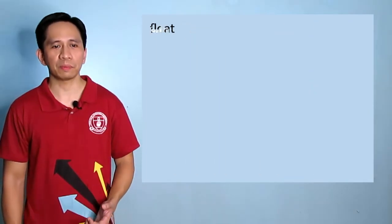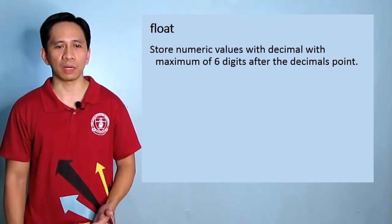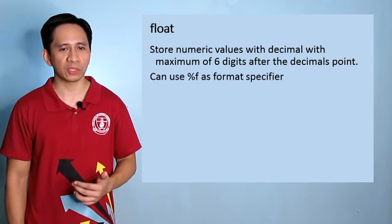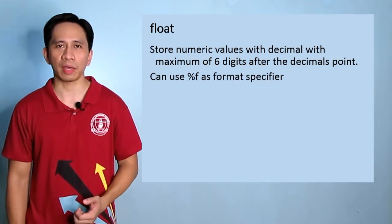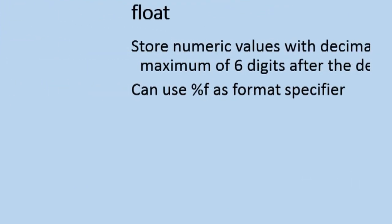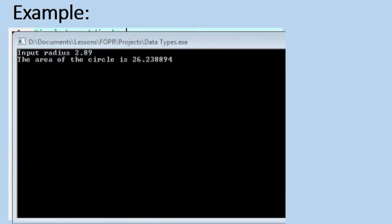The next data type is float. It stores numeric values with decimals, with a maximum of 6 digits after the decimal point. We can use %f as format specifier for printf and scanf. Try to do this example. Pause the video for a while and do it in Dev C++. Running the application, you see this result. You'll notice that this time we're seeing decimal values.